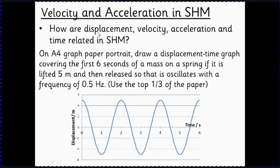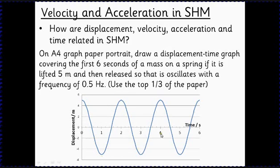Now we've looked at how displacement varies with time, we can look at the velocity and acceleration in simple harmonic motion. We've already said the acceleration is not constant, and the velocity clearly is not constant either. So we need to look at how all these things are related to time, and how acceleration is related to displacement. Here's our displacement-time graph with amplitude 5 in this example. Our first job is to think about what the velocity-time graph might look like.